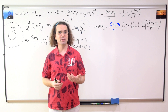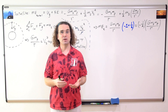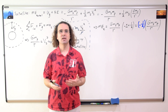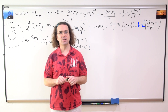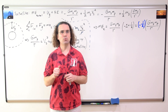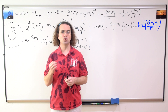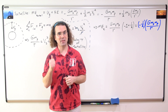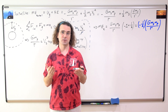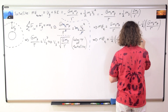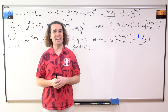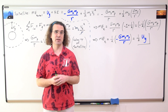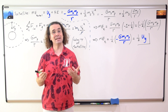Factoring out every variable leaves us with negative one plus one-half in the parentheses, which equals negative one-half. In other words, the total mechanical energy of an orbital object equals negative one-half times the universal gravitational constant times the mass of the satellite times the mass of the planet, all divided by the orbital radius. That means the total mechanical energy of a satellite equals half the universal gravitational potential energy between the satellite and the planet.